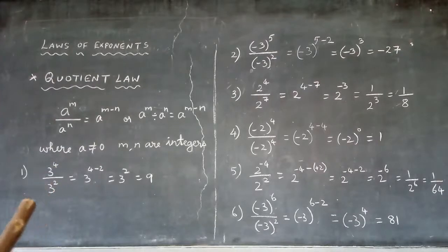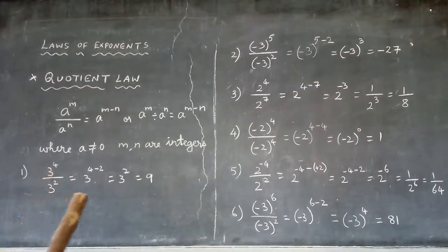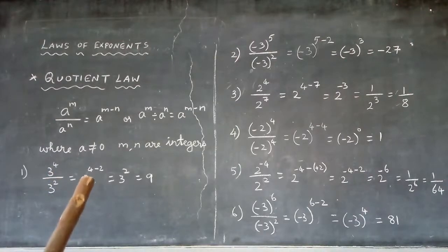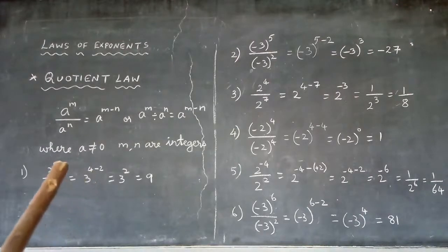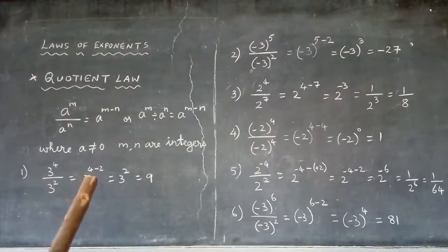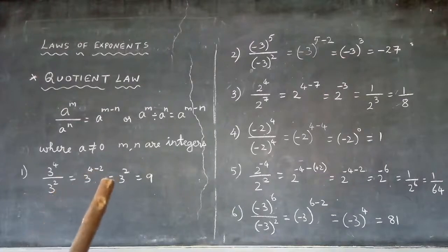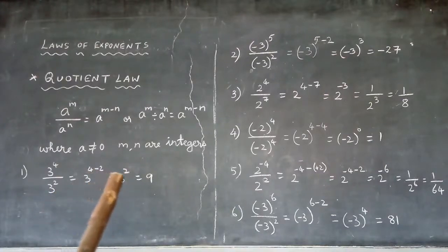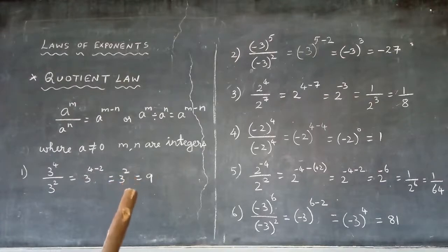Example 1: 3⁴ divided by 3². These are powers with the same base, so we write the base 3 and subtract the exponents: 4 minus 2. So 3^(4-2) = 3². And 3² = 3 × 3 = 9.